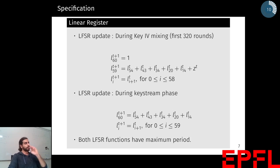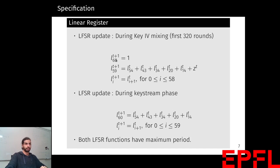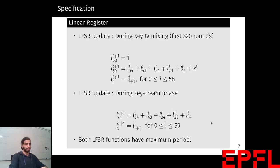Let's talk about the LFSR updates. As you can see here, in the first 320 rounds, the LFSR update does not touch the 61st bit, and the generated keystream bit is given back to the register. During the keystream generation phase, all 61 bits are getting updated, and both LFSR functions would have maximum period this way.